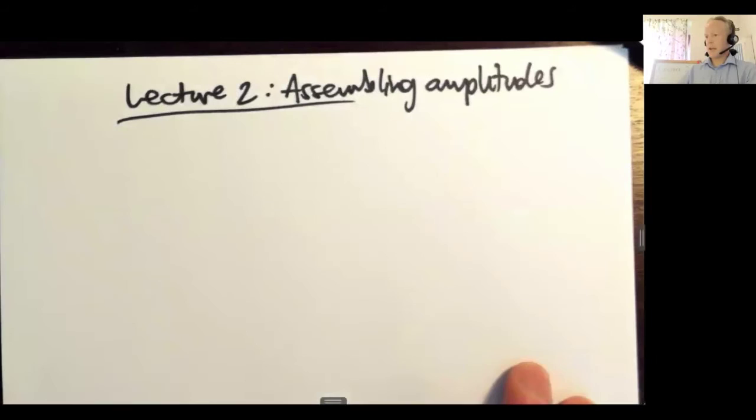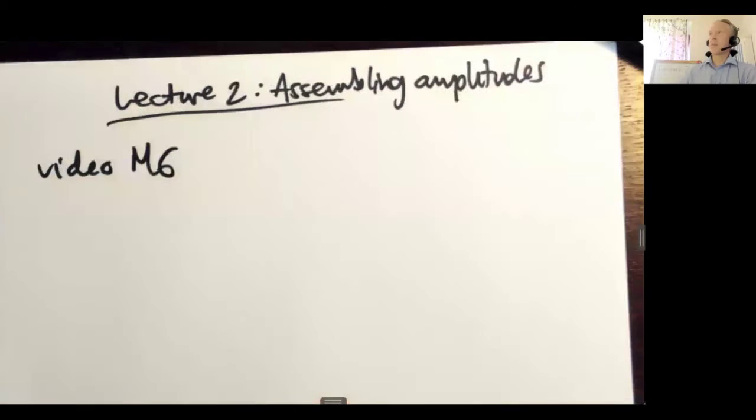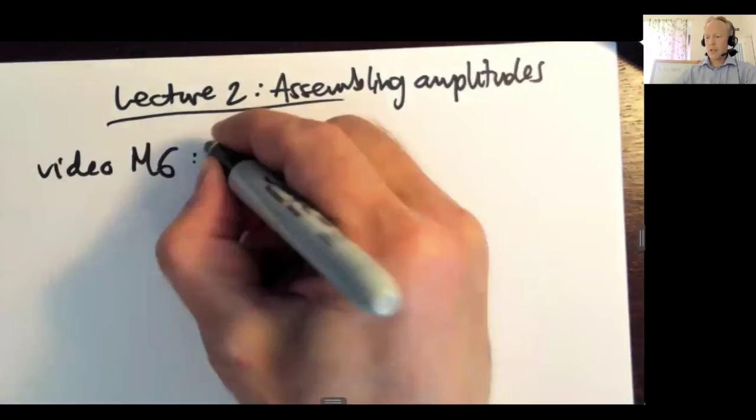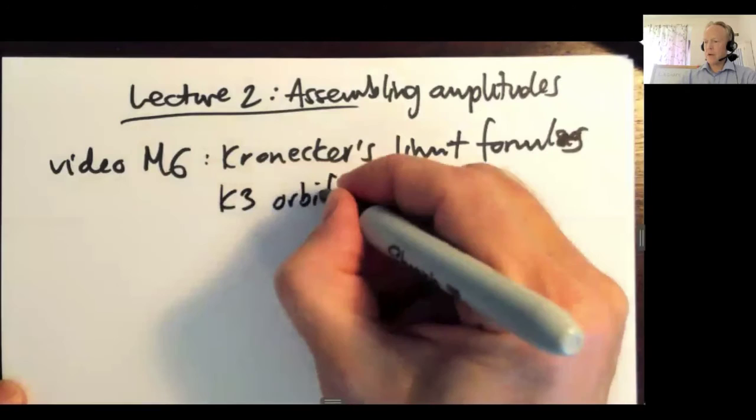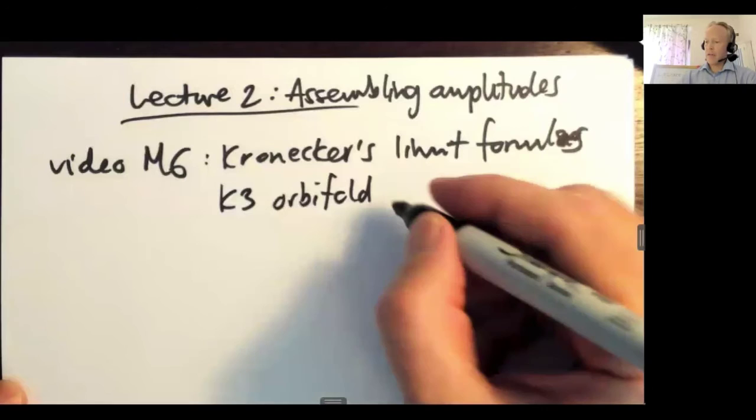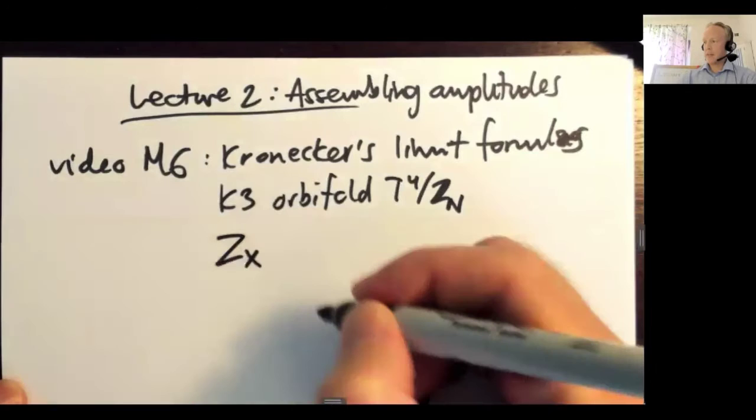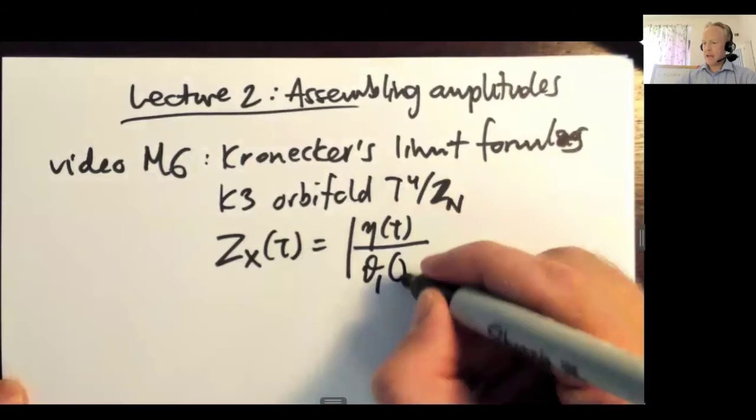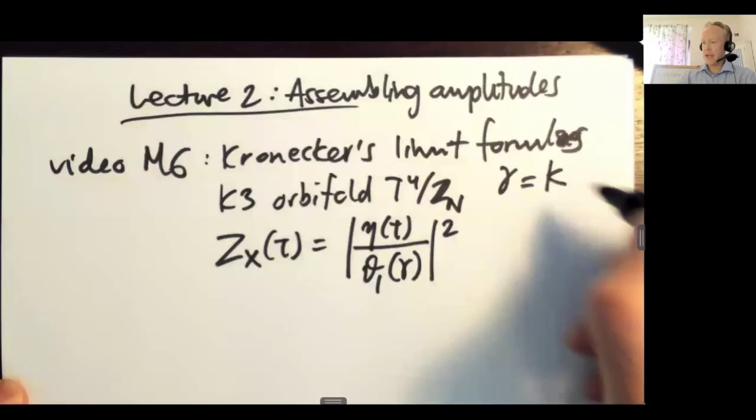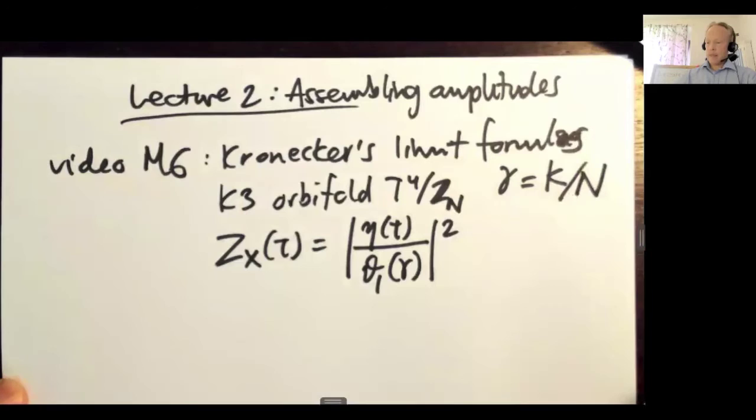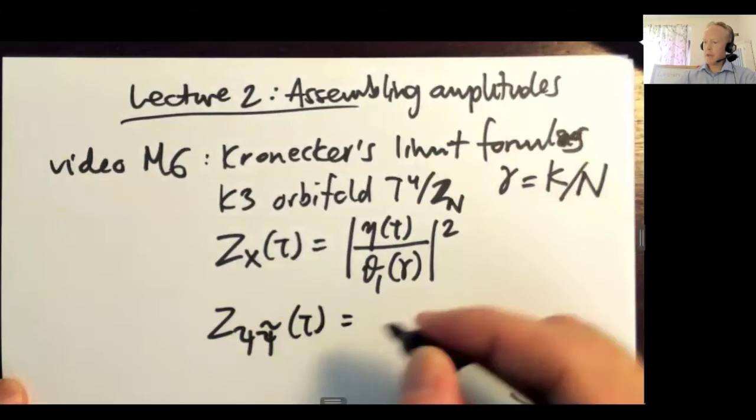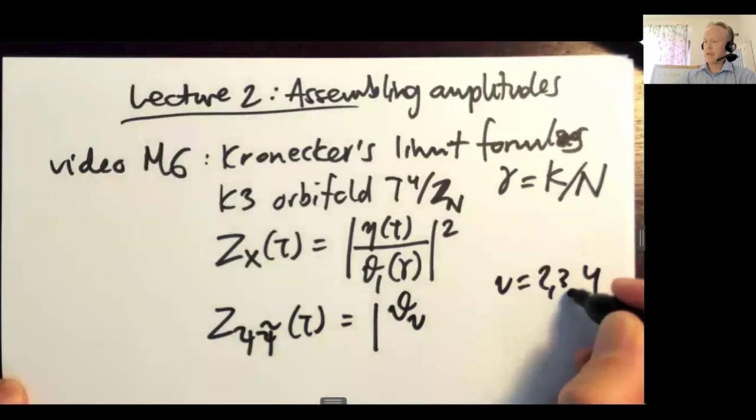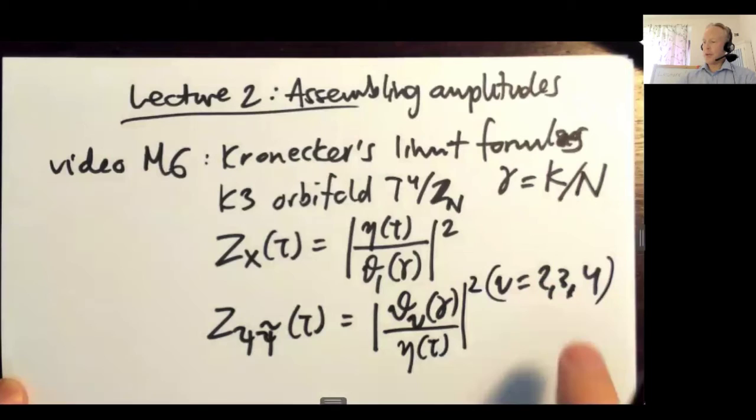I'd like to start by referring back to video M6. I recommended for the previous lecture, lecture one, that you take a look at video M6, which is Kronecker's limit formulas. What I do in this video is I look at the partition function or zero point amplitude of a K3 overfold, like T4 over Zn. I claim that the partition function of a scalar boson as a function of tau is basically the Dedekind eta function divided by the Jacobi theta function theta 1, evaluated at gamma, where gamma is the orbital sector K divided by capital N.